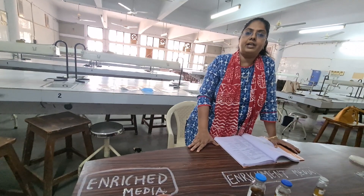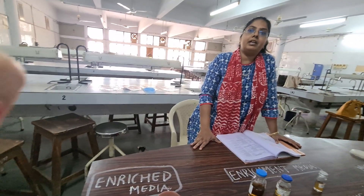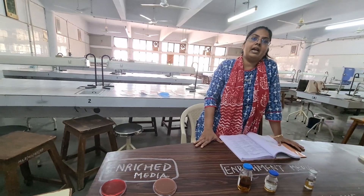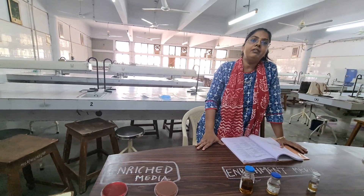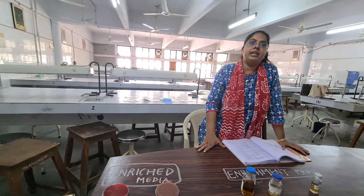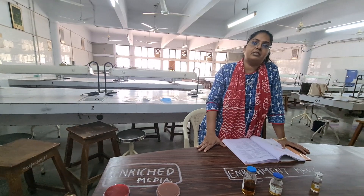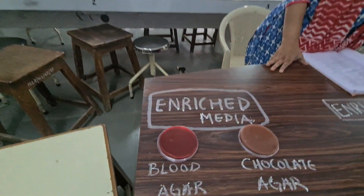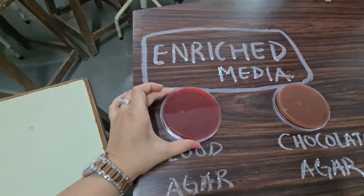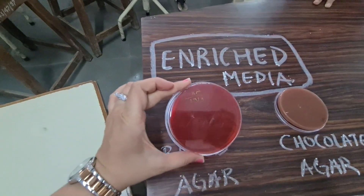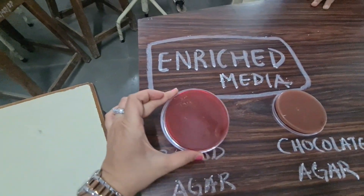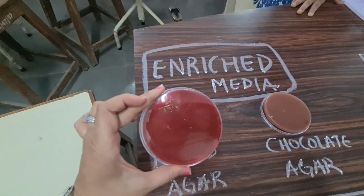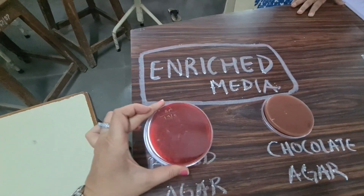Now, enriched media. Enriched media contains blood, egg, hydrocoel fluid, and serum in addition to basic substances. Enriched media is used for the growth of fastidious microorganisms. This is a blood agar plate, where the enriching substance is blood.